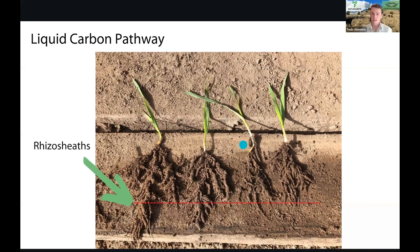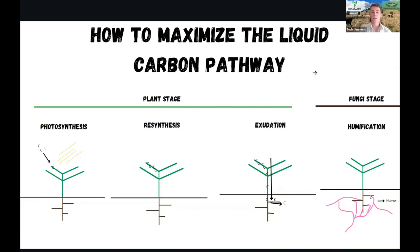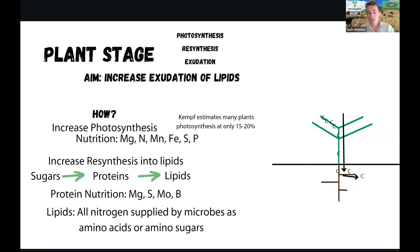So how can we maximise the liquid carbon pathway? We have two stages: the plant stage and the fungi stage. The plant stage consists of increasing root exudation of lipids. Since 30 to 40% of humus is lipid content, if we can increase lipids produced by our plants, we should be able to increase the humus in our soil. Plants prioritise a certain sequence of production: carbohydrate production first, then protein production, then lipid production. So we need to increase all of that before we can increase our lipid production.